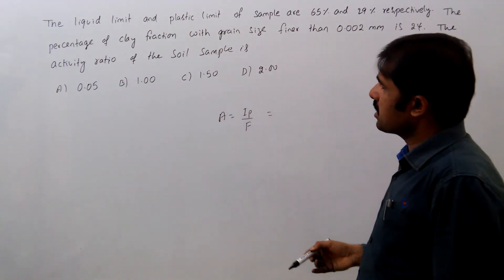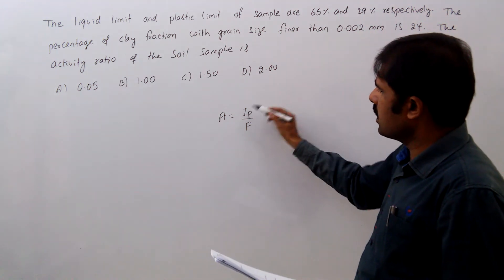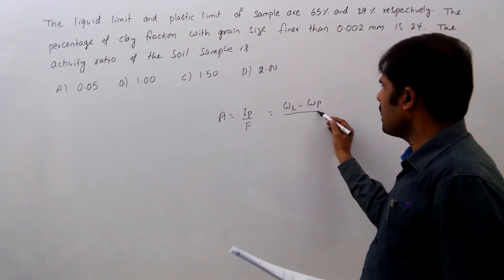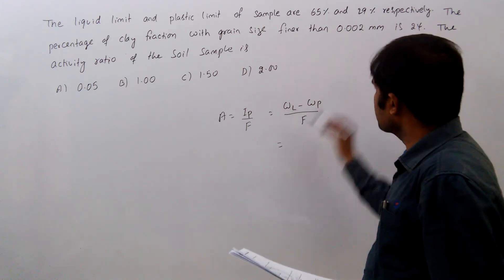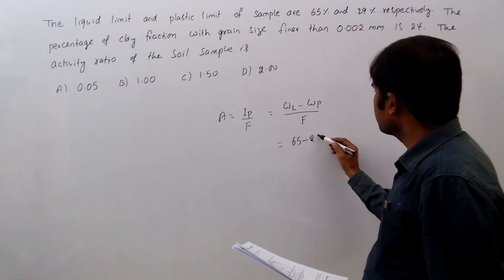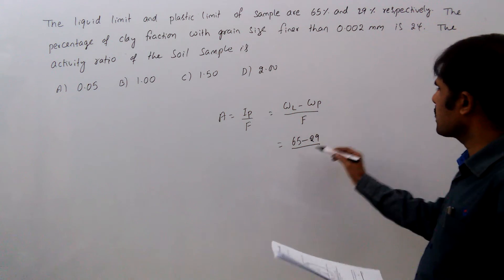Plasticity index is liquid limit minus plastic limit divided by F. What is liquid limit? 65 minus plastic limit 29, divided by percentage of clay fraction 24%.